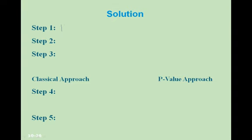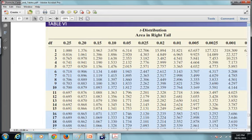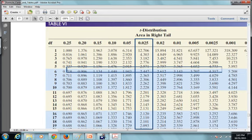Step one: the null hypothesis is that the mean equals 5.67, and the alternative is that the mean is different from 5.67. Step two: alpha equals 0.05. For a two-tailed test, we look for plus or minus t sub 0.025 with degrees of freedom equal to 17. From table 6, the critical value is positive or negative 2.110.